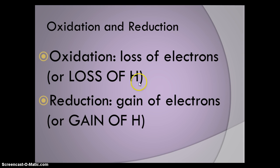Oxidation occurs when a molecule loses electrons or loses hydrogen. An atom that is oxidized undergoes either loss of electrons or loss of hydrogen. The opposite of oxidation is reduction. Reduction is when an atom or molecule gains electrons or gains hydrogen.